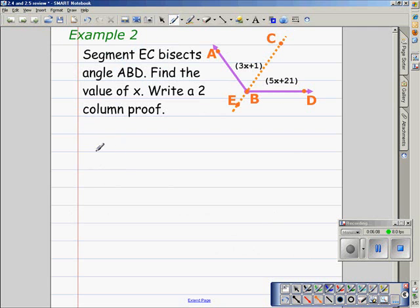So we're working with a two column proof again. We're going to have our statements and our reasons.